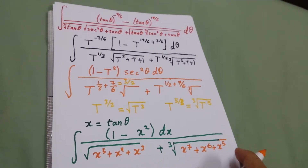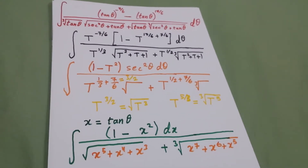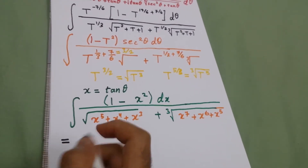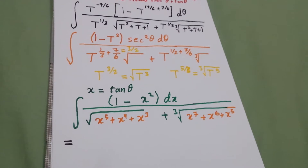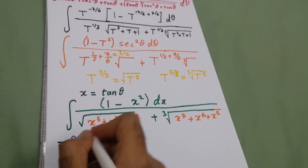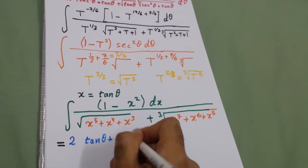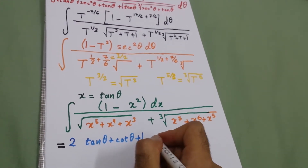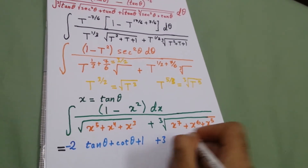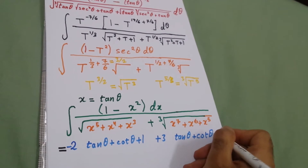This integration was done before — you can check the description of this video to find how to evaluate it. The final answer will be equal to 2 over (tan theta plus 1) times (tan theta plus 1), minus 2, plus 3 over (tan theta plus 2) times (tan theta plus 2).